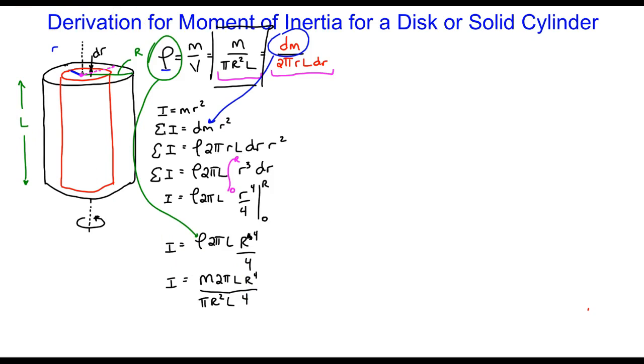We can see that there's going to be some simplifications. The pi goes away, R squared reduces - in the denominator it goes away, in the numerator it's r squared. The L's drop out and the two and the four reduce to just a two in the denominator.